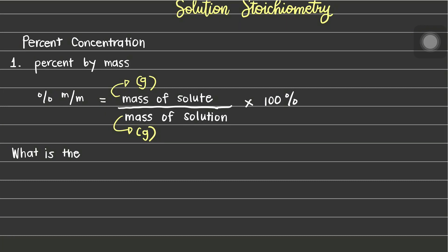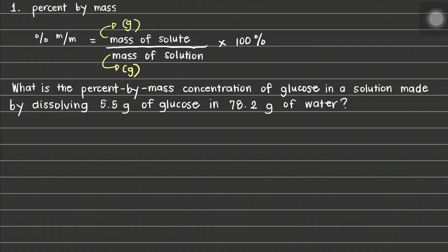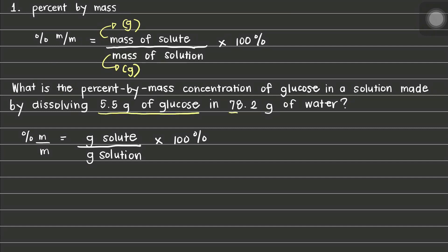Now that we have defined and set up the formula for percent by mass, let us apply it by solving the following problem. What is the percent by mass concentration of glucose in a solution made by dissolving 5.5 grams of glucose in 78.2 grams of water? To solve this, first we must write down our formula, and then go back to the problem and identify the given. We have 5.5 grams of glucose and 78.2 grams of water as our solute and solvent.